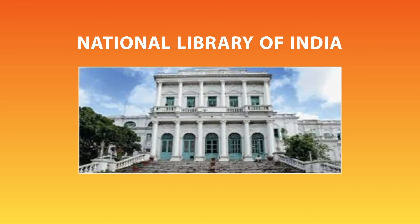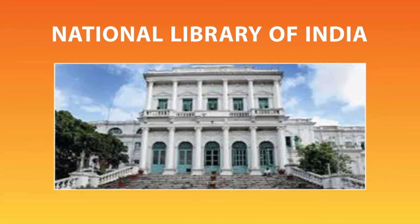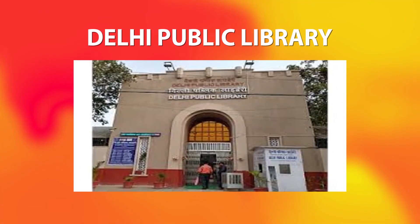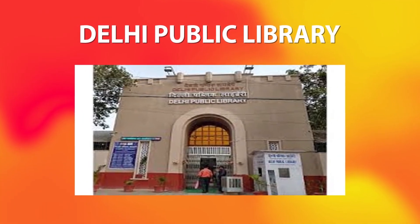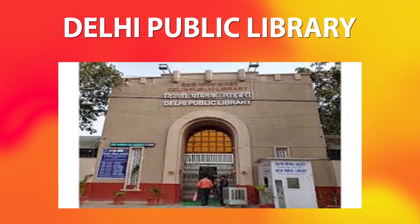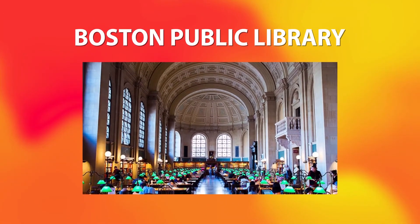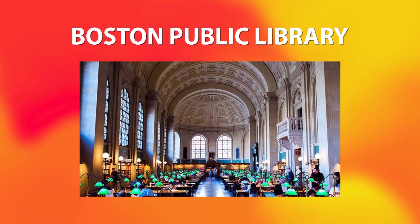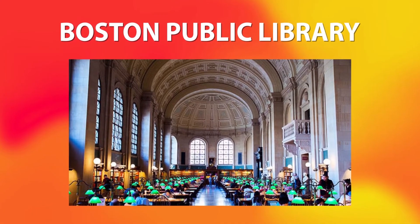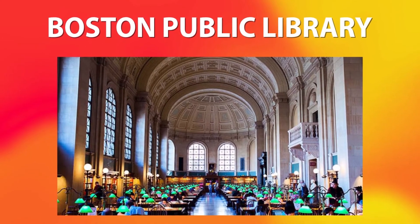This picture shows the National Library of India, situated in Kolkata. Similarly, this is Delhi Public Library (DPL), which has a very good network of public libraries and was established with the help of UNESCO. This is also a picture of Boston Public Library. These pictures are shown to present how public libraries are changing and how beautiful and functional library buildings are becoming these days.